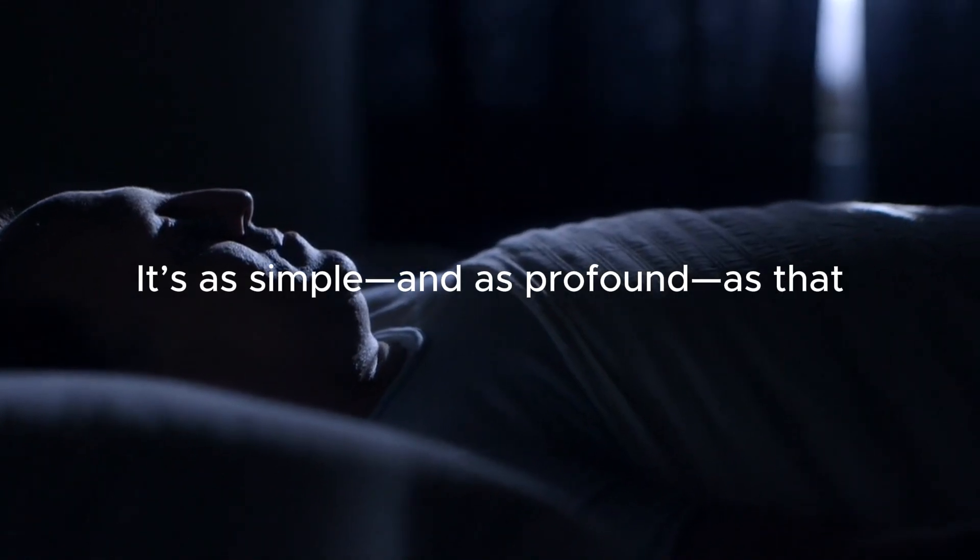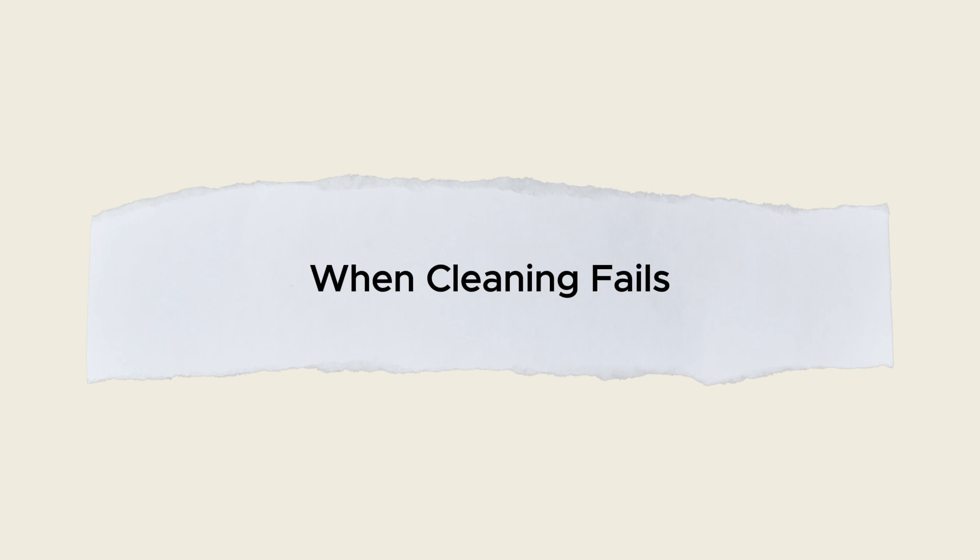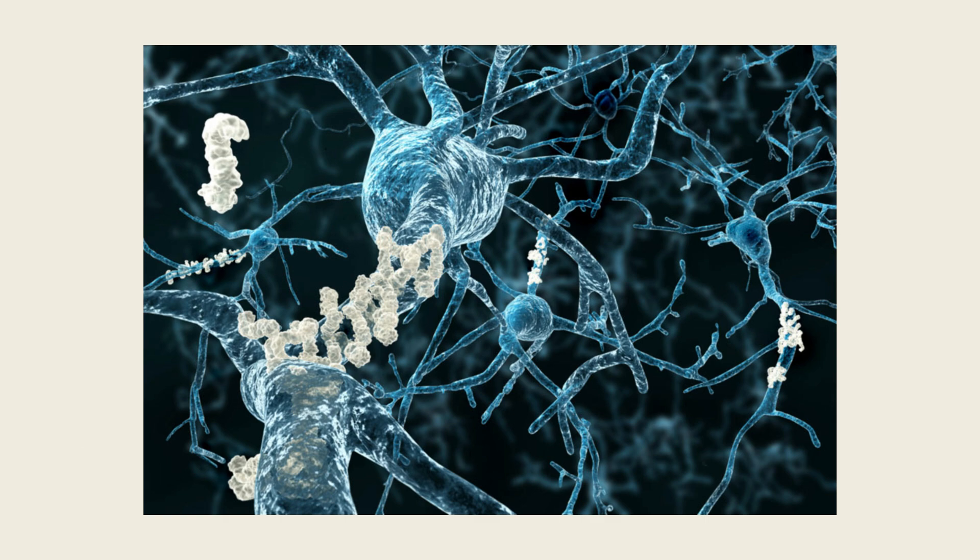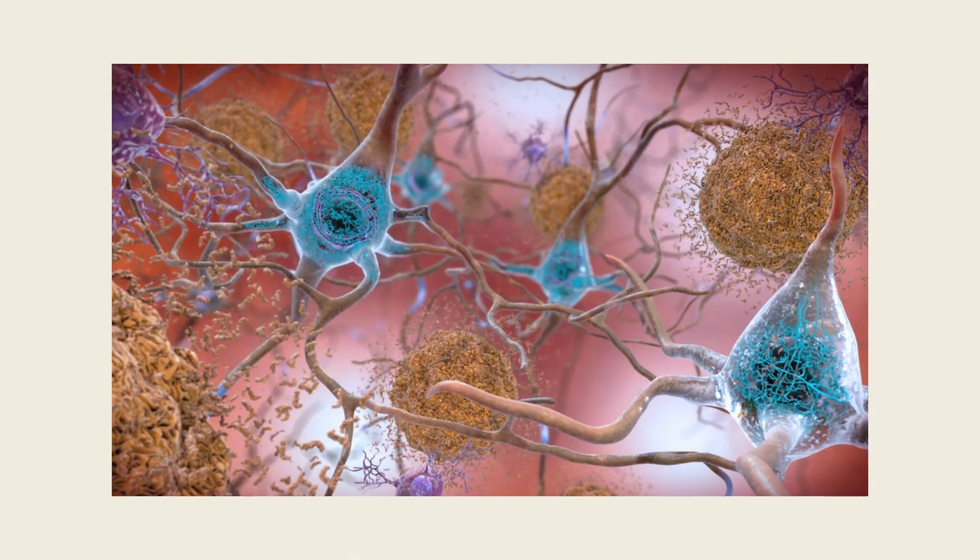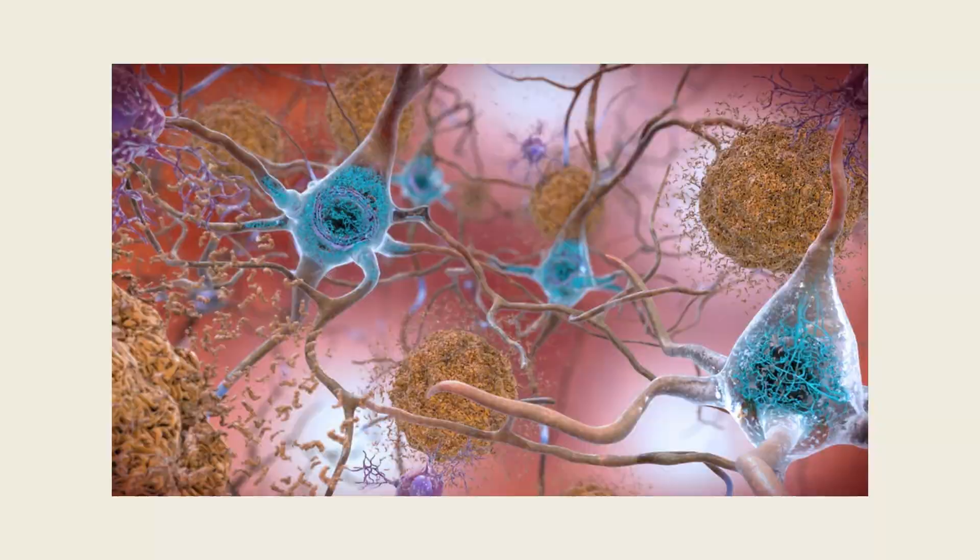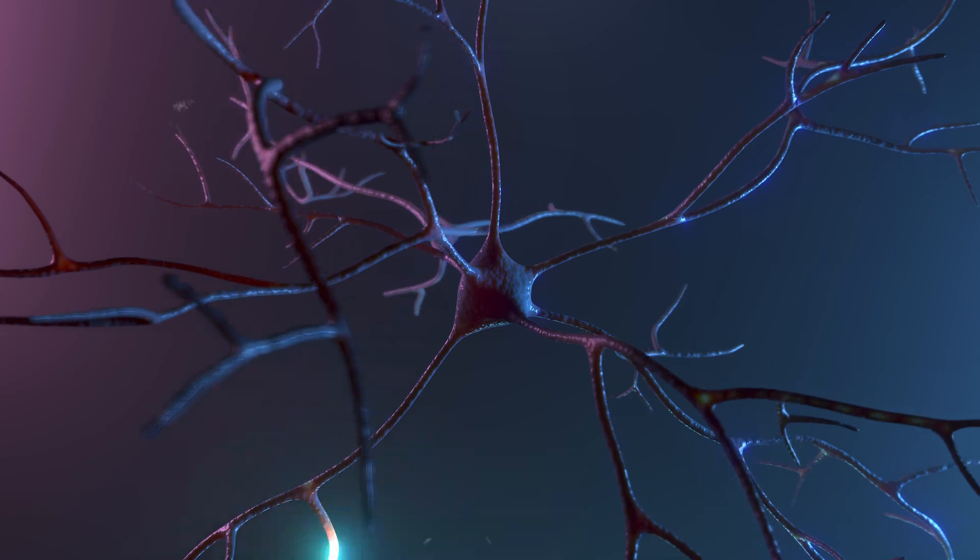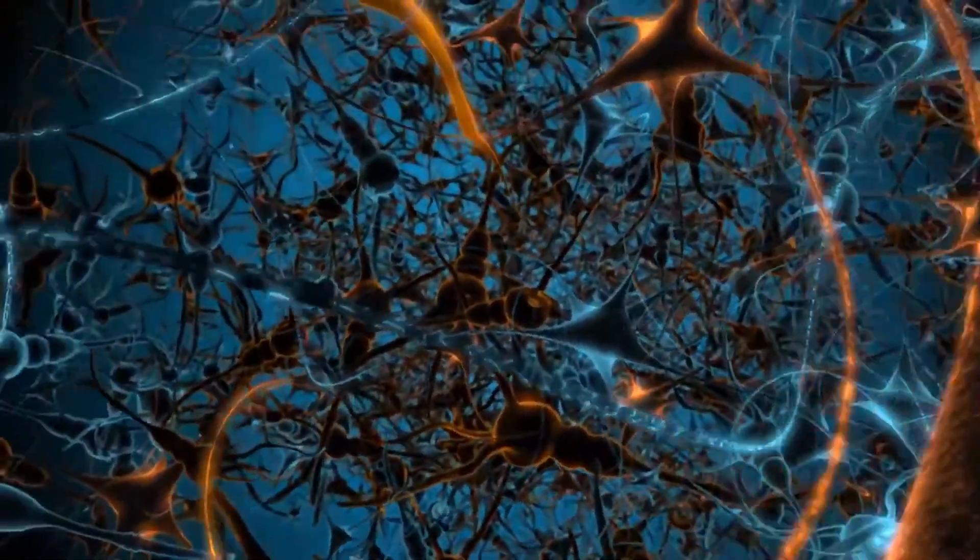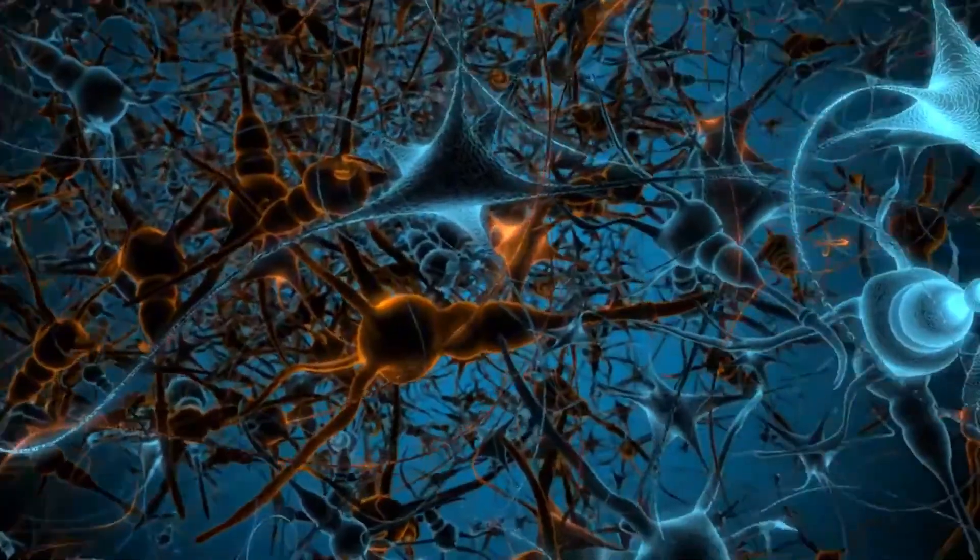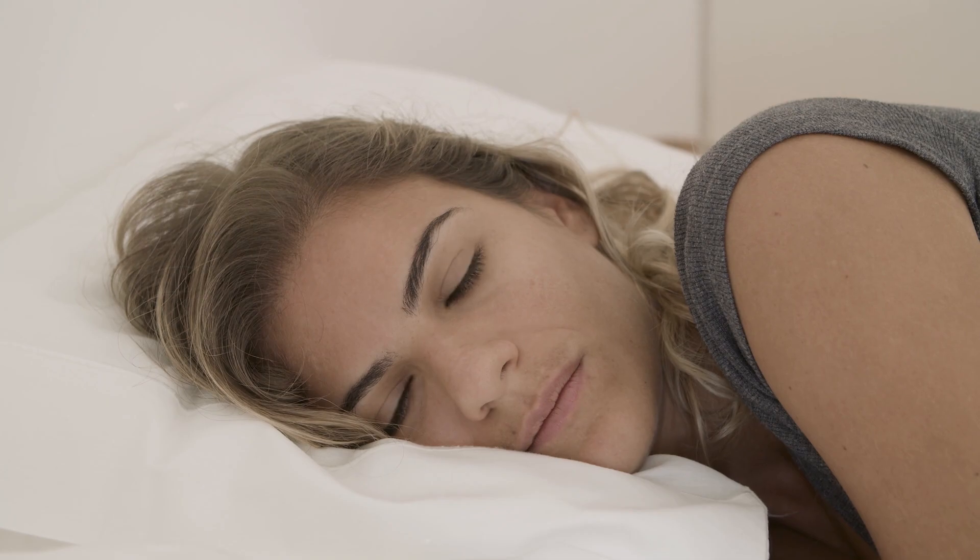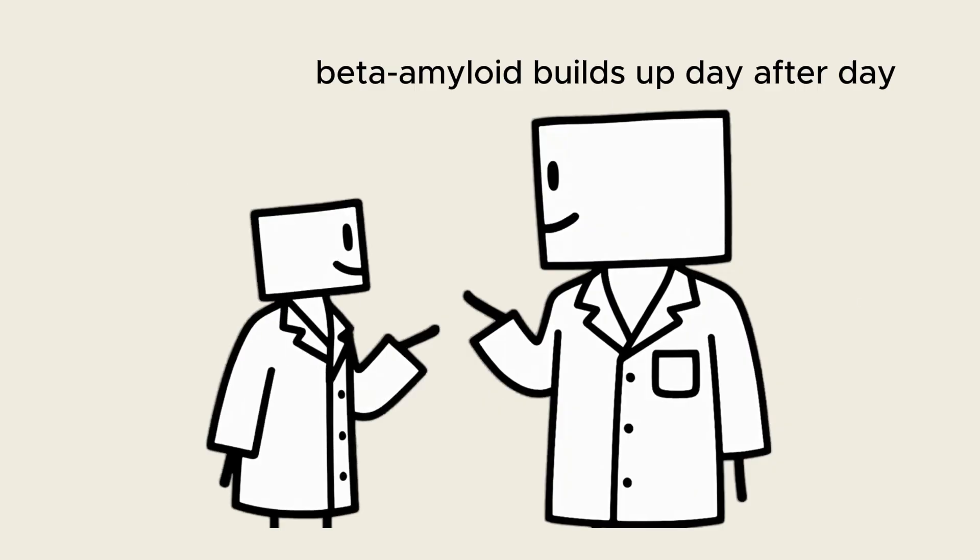When cleaning fails, the first signs of silent damage. What's the first molecule to accumulate when glymphatic clearance falters? Beta-amyloid, a sticky peptide that clogs the spaces between neurons, impairing synaptic communication. Beta-amyloid is the primary component of the amyloid plaques found in Alzheimer's disease. Under normal conditions, about 40% to 60% of produced beta-amyloid is flushed out nightly. But with fragmented or insufficient sleep, that percentage plunges, and beta-amyloid builds up day after day.